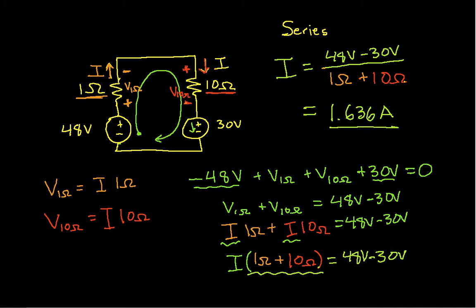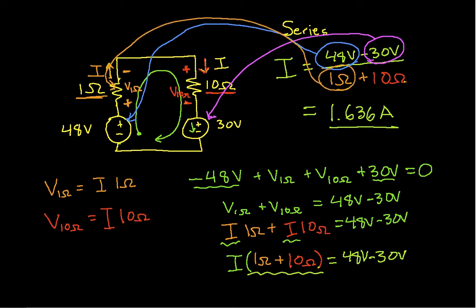Now, it turns out that there's a couple of interesting things to point out here. One, well, actually the most interesting thing and the most useful thing is you'll notice that I have here 48 volts. That corresponds to this source. 30 volts corresponds to this source. And then 1 ohms corresponds to this resistor. And 10 ohms corresponds to this resistor.